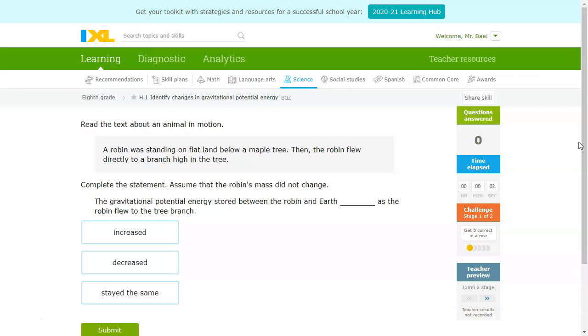Now, with that out of the way, let's do some practice problems. Once again, remember, mass and distance. The gravitational potential energy stored between the robin and Earth blank as the robin flew to the tree branch. So, it looks like the robin was standing on flat land below the tree, and then it flew to a branch high in the tree. So, the distance between it and the center of the Earth increased. So, this would be increased.